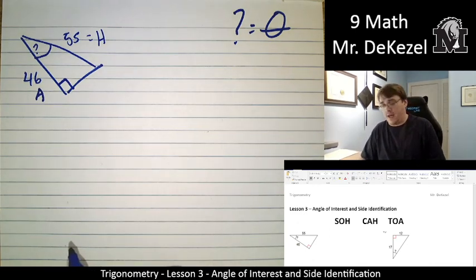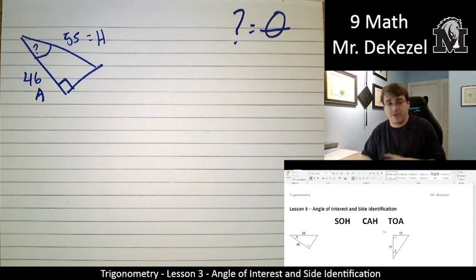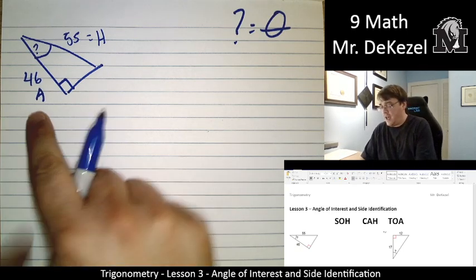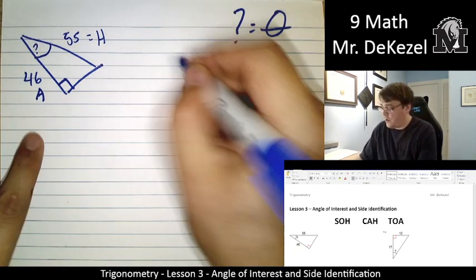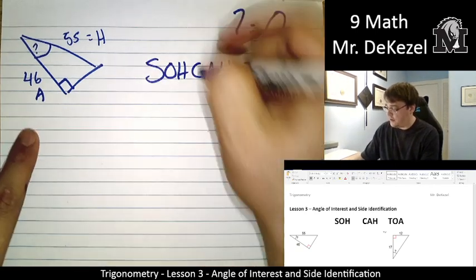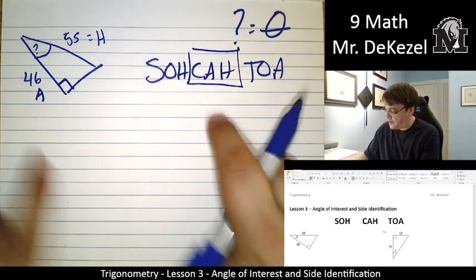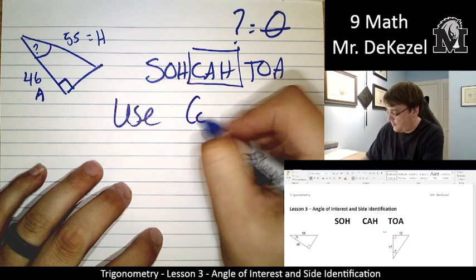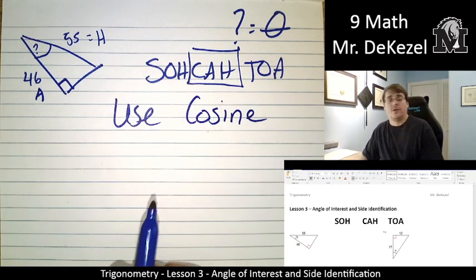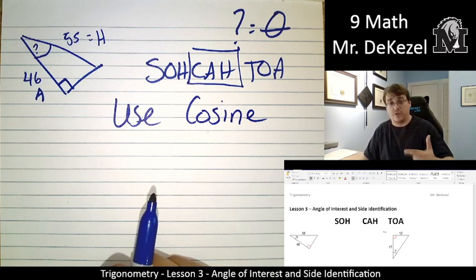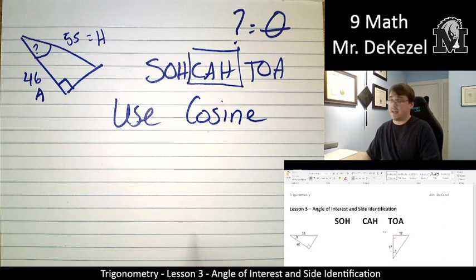So what we can do now is determine what trigonometric ratio we would use in this situation. We won't use it yet, but which one are we going to use? So if we have A and H, that works out. So I'll just write out our acronym again. If there is A and H, adjacent and hypotenuse, we're going to use cosine. So we're going to identify our sides and identify which trigonometric ratio to use. That's the goal of the lesson today.